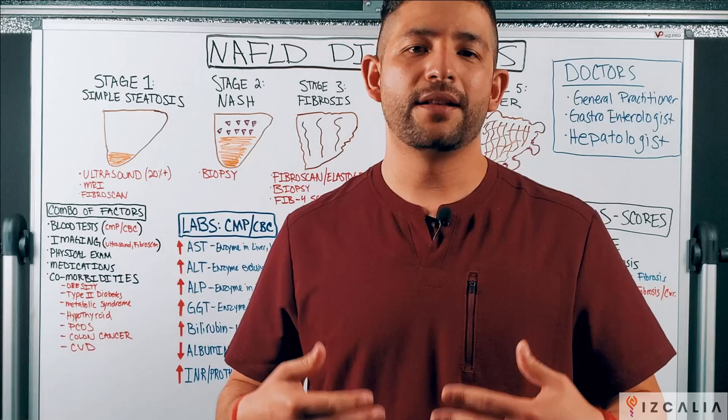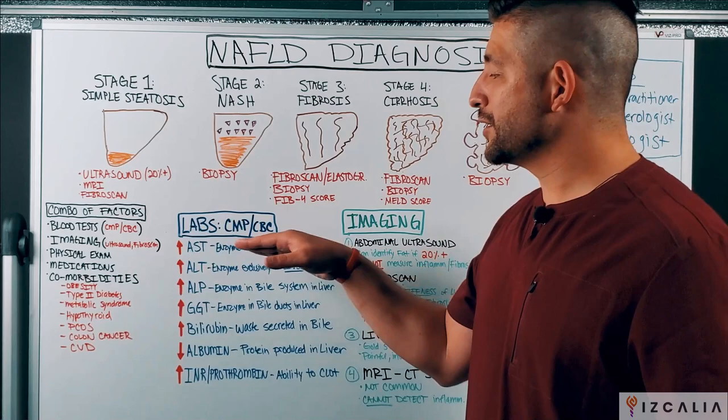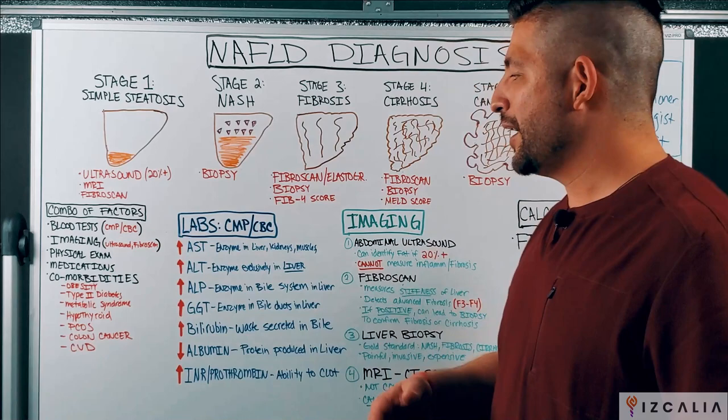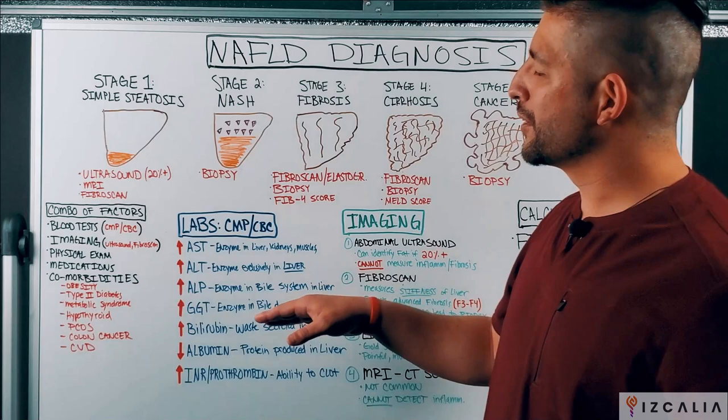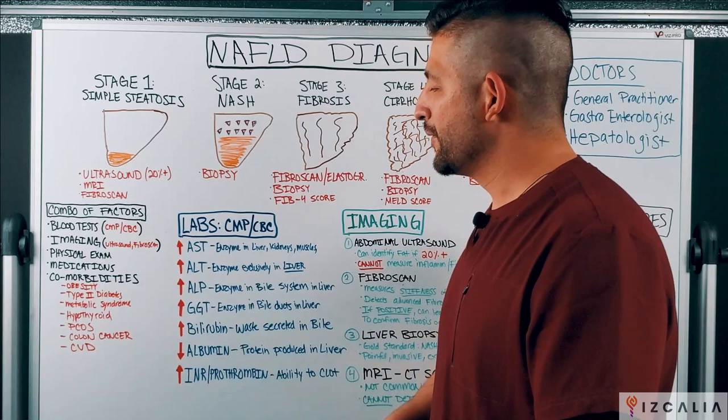Now let's talk about your blood test results and what some of those values mean. Your doctor will typically order either a CMP or a CBC, or usually a combination of both. These values are often found in the CMP panel, so if you have a copy of your blood test results, you can follow along. I've pulled out some of the more common lab test results that are typically found in someone who has NAFLD.